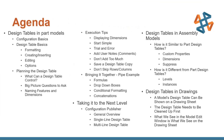That wraps everything up. We started with design tables in part models, covered configurations and design table basics, execution tips, and planning. We brought it all together with the pipe example, took it to the next level with Configuration Publisher and its different options, went through assembly models — similarities and differences from parts — and closed with design tables in drawings. Hopefully this gives you a better perspective of what you can do with design tables and the ability to really control your designs.